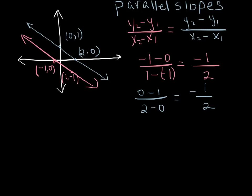So we can very nicely see that the slope of my pink line is negative 1/2 and that is equal to the slope of my blue line, negative 1/2. So my conclusion is the slopes of the two lines are equal therefore they are parallel.